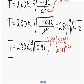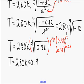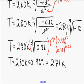So when we put that number in, we're going to get 280K times 0.969. Just multiply those numbers together and get 271 Kelvin.